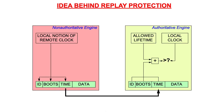Replay protection could be based on timestamps expressed in UTC time. Unfortunately, such an approach would require all devices to know the precise time and therefore implement the network time protocol or synchronize with GPS. However, one of the design goals behind SNMP was that SNMP should remain operational whatever happens. Therefore, the decision was taken not to rely on the network time protocol or GPS. Instead, each agent maintains a local clock and the manager keeps track of that agent's clock.